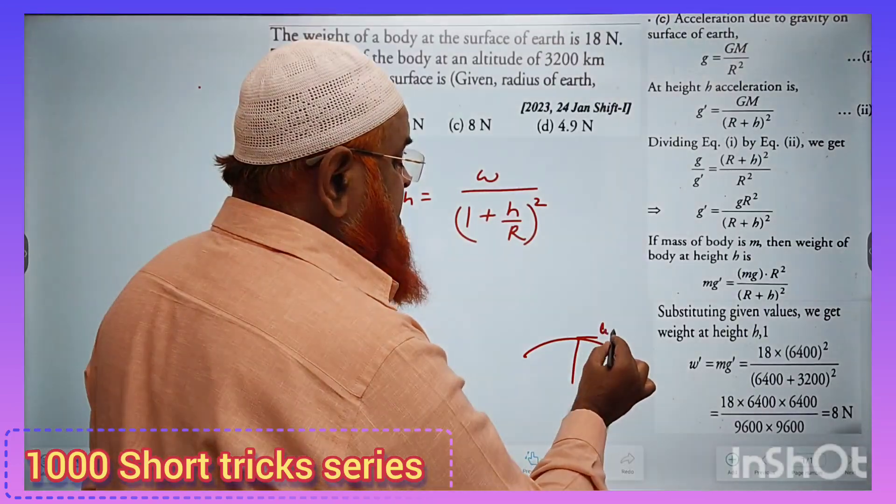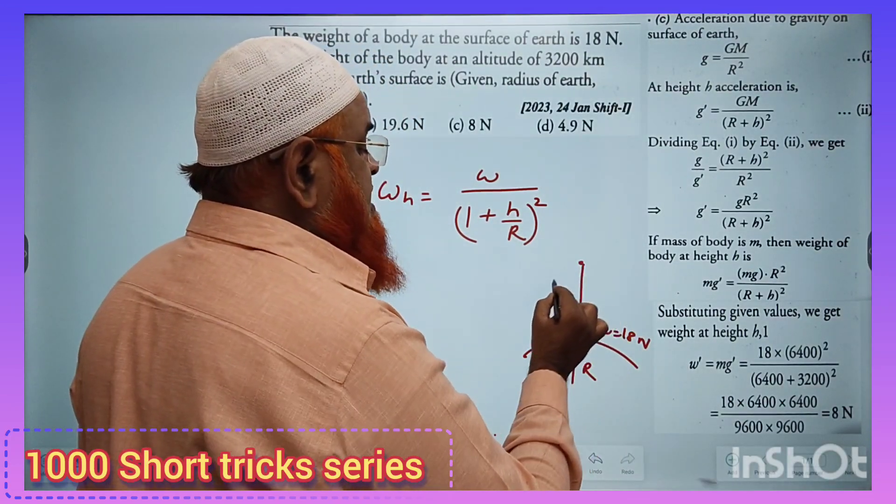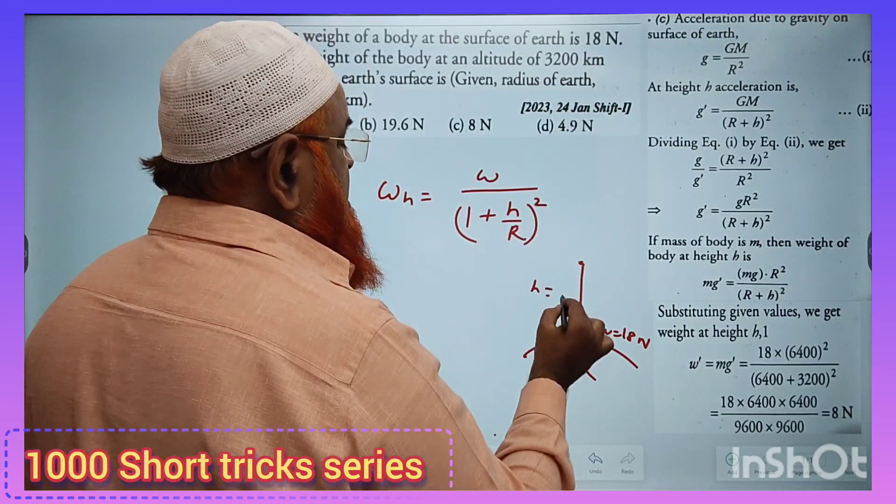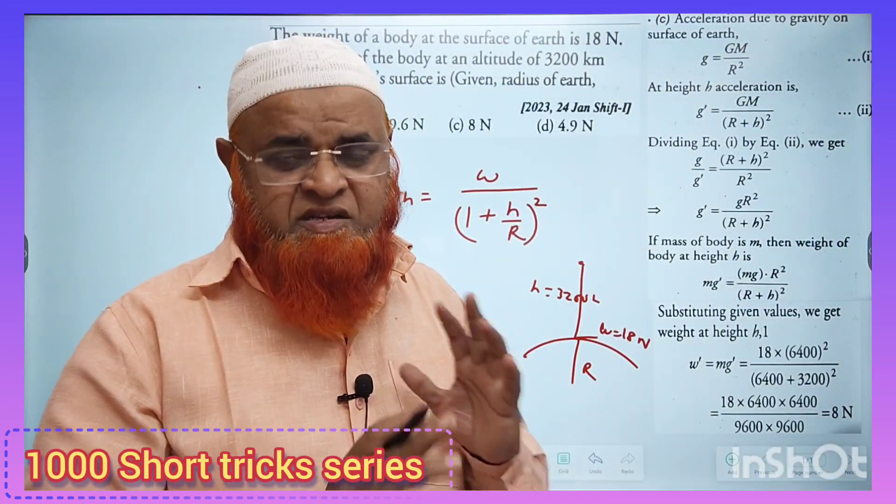At this place, weight is taken as 18 newtons. What is the weight at this place at certain height equal to 3200 kilometers? At certain height, he is asking us to find out the weight.